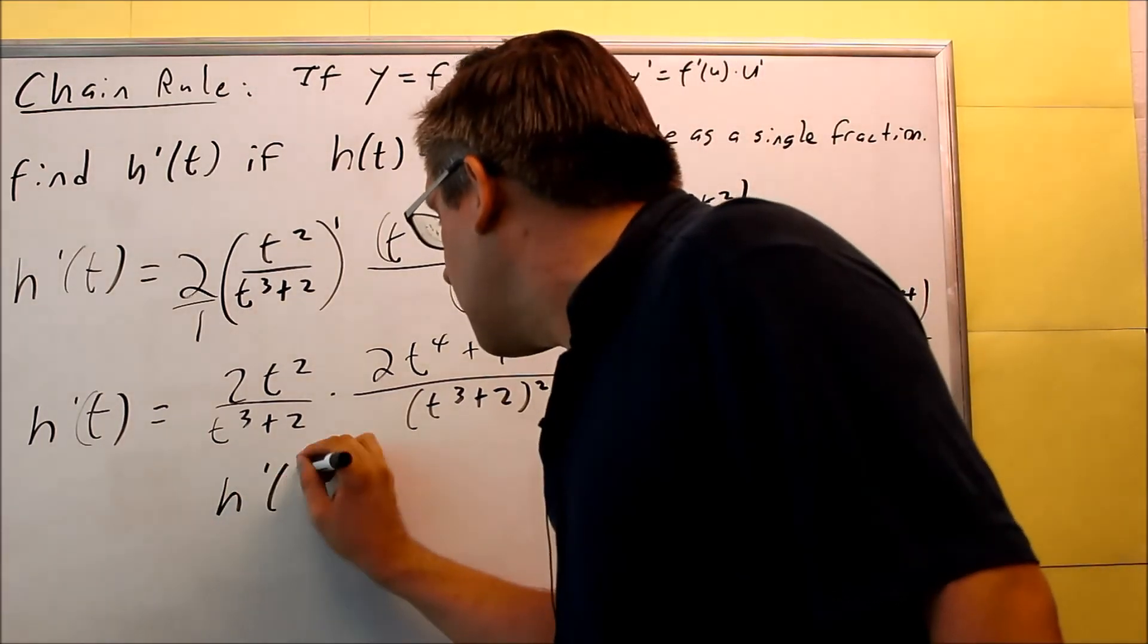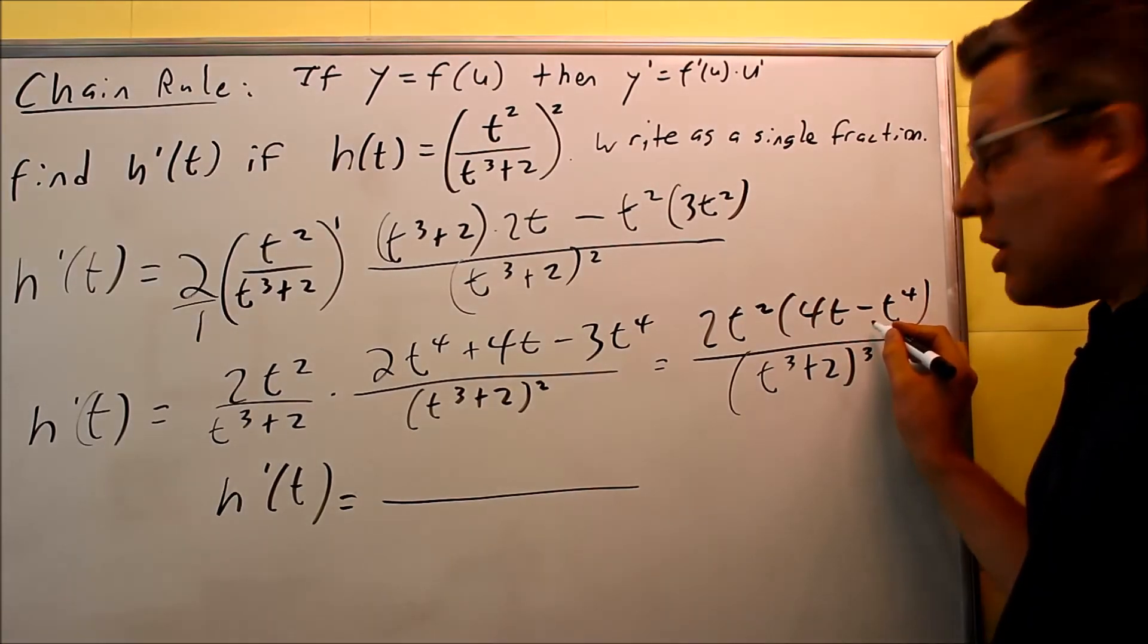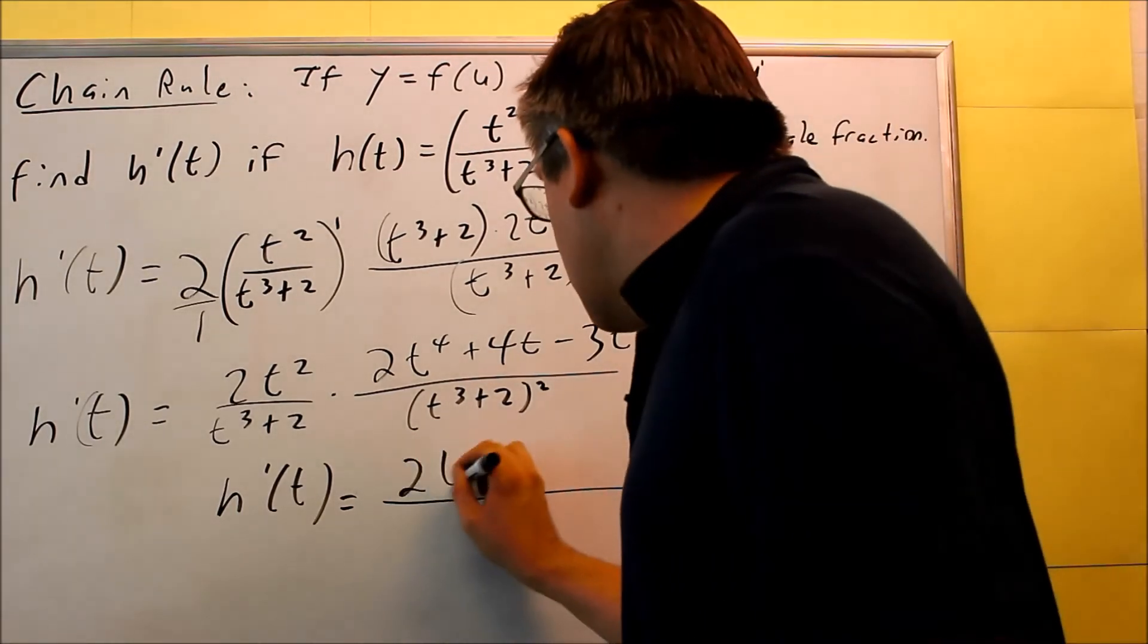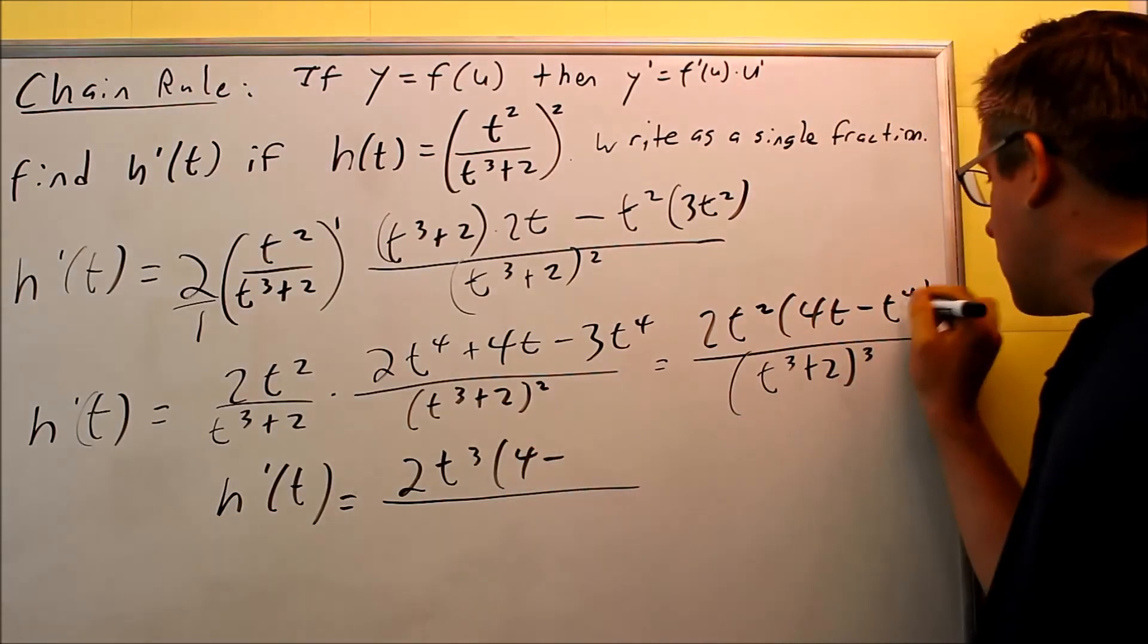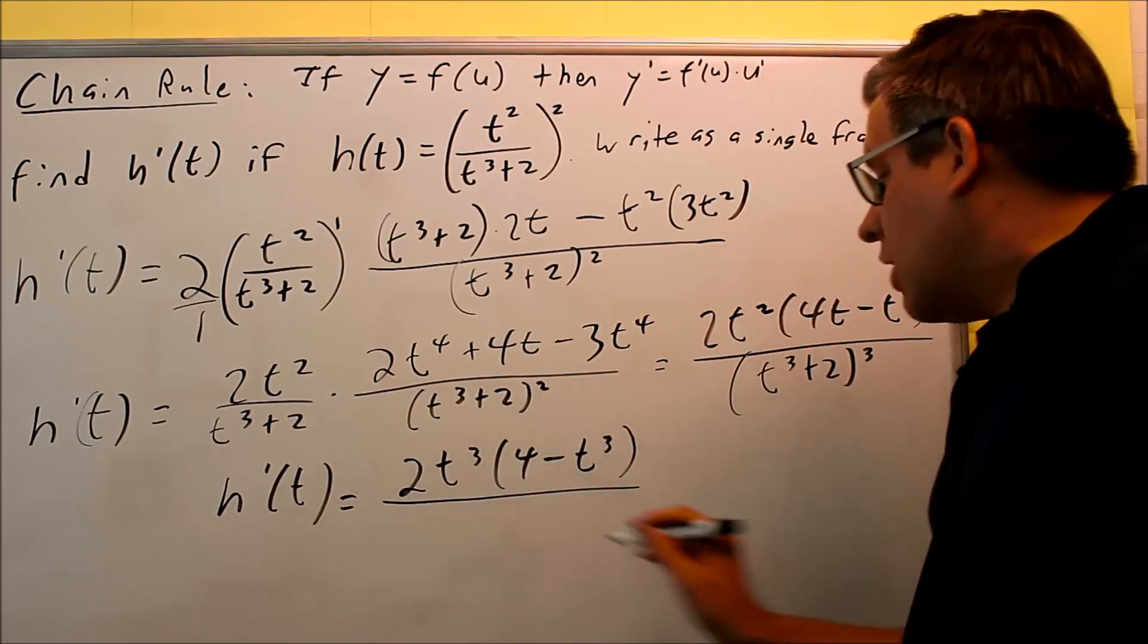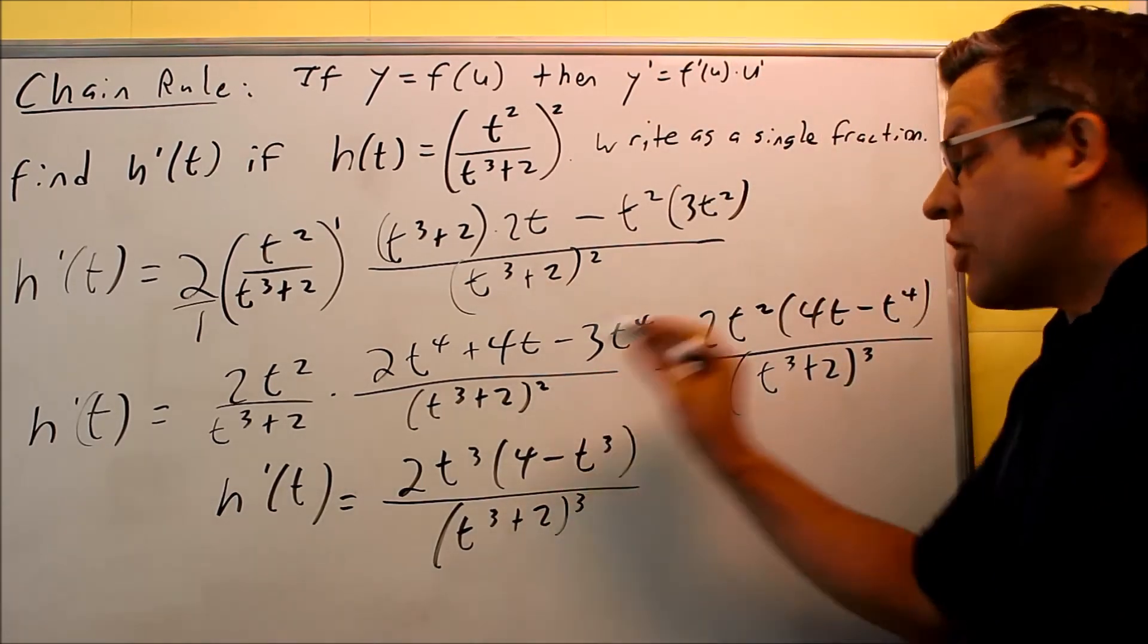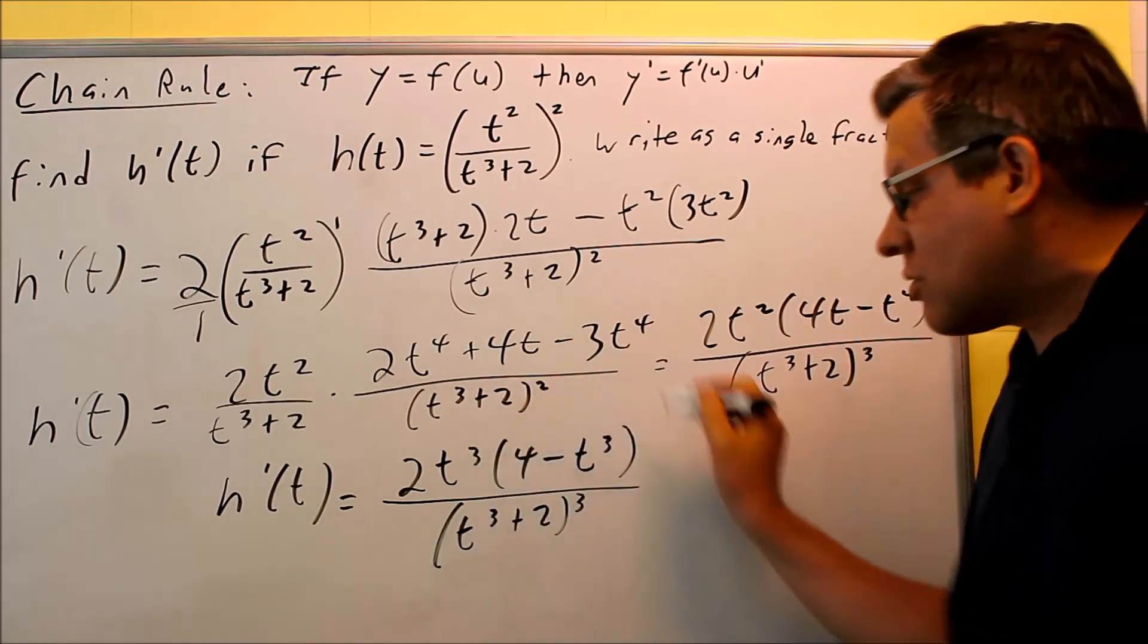Your final answer, we can do one more factoring step. We can factor out a t from here, and that's going to go on the outside. So if I pull a t out, it's going to make that outside one t cubed, so 2t cubed. And then what's left over on the inside is 4 minus, subtract 1 from this will give you t cubed. And then the bottom, we still have t cubed plus 2 whole quantity cubed there. So this will be your final factored answer. They wanted a single fraction, it is a single fraction, and it's already factored.